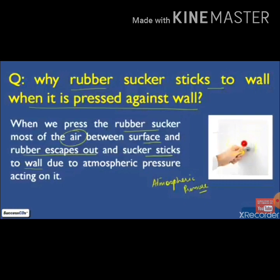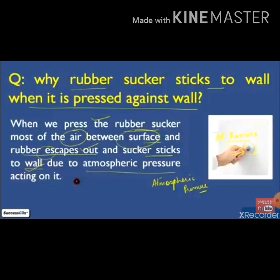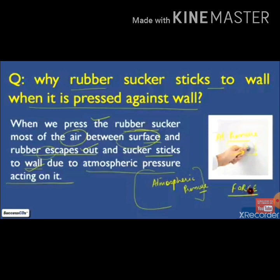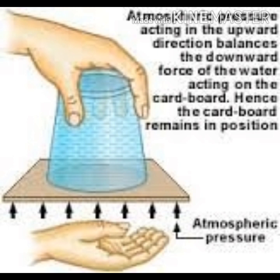Due to the atmospheric pressure, the rubber sucker sticks to the wall. Whenever we want to remove the rubber sucker, we have to apply a force, and that force must be more than the atmospheric pressure — only then can the rubber sucker be easily removed from the wall. The rubber sucker sticks because of atmospheric pressure, and to remove it, you must apply a force greater than atmospheric pressure. Even the rubber sucker behind a toothbrush works the same way, allowing the toothbrush to stick to a wall or surface.